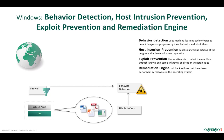The remediation engine rolls back actions taken by programs deleted by file threat protection, virus scan tasks, and behavior detection. Actions to be rolled back include any changes made to the file system — creating, relocating, renaming files or registry keys — and the records created by the malware are deleted.